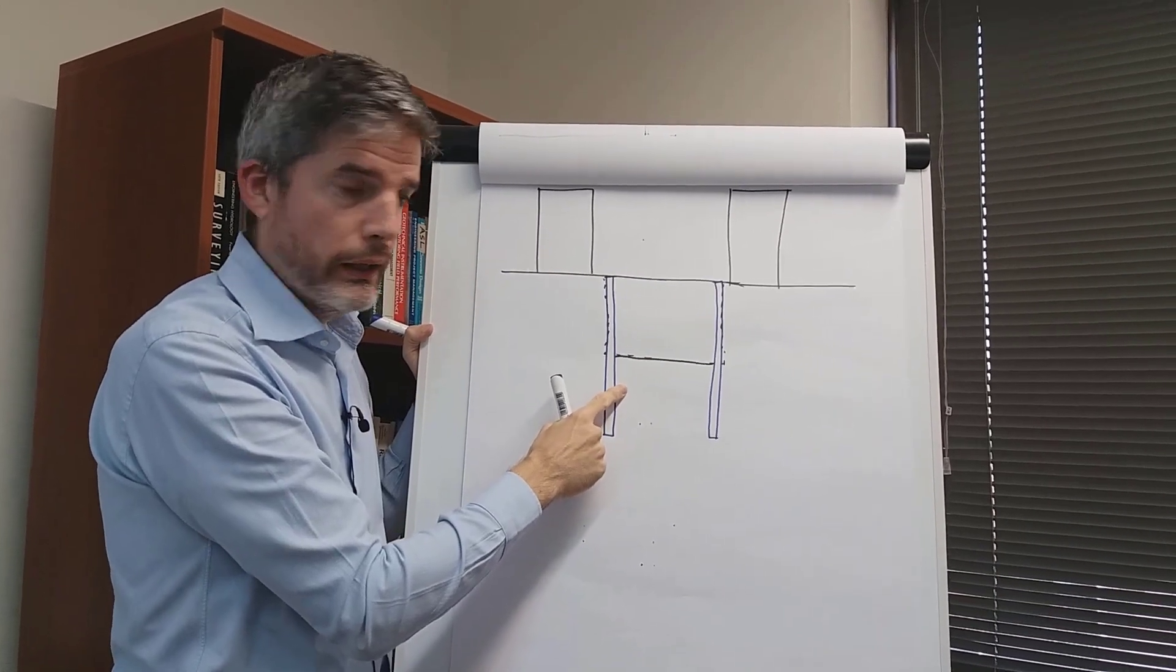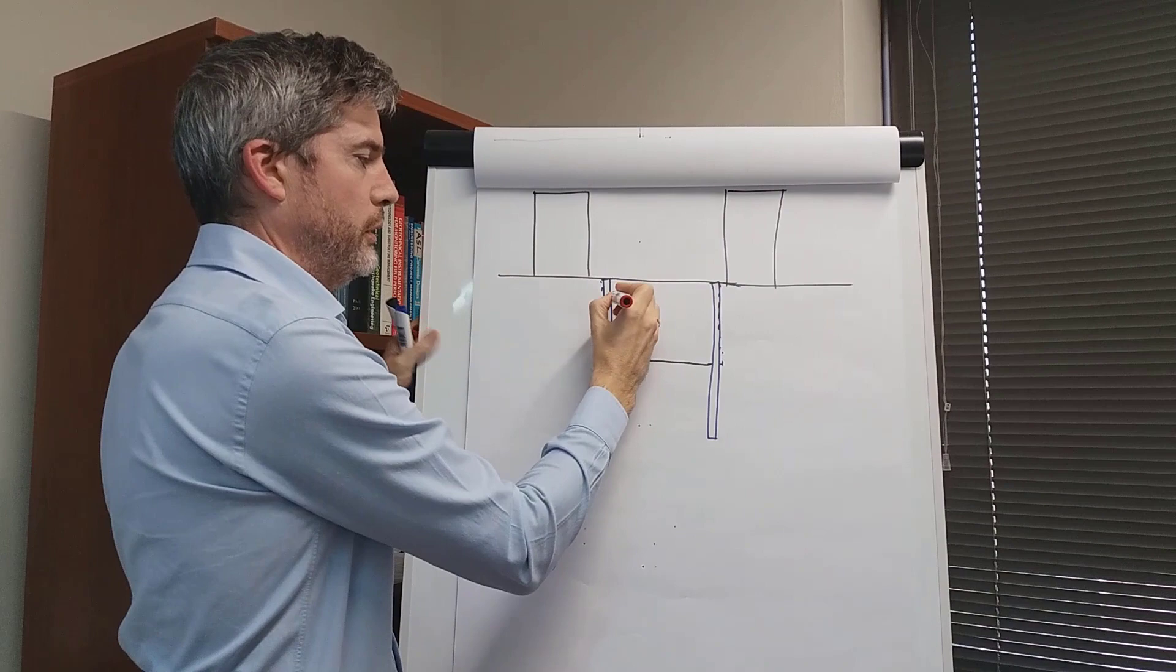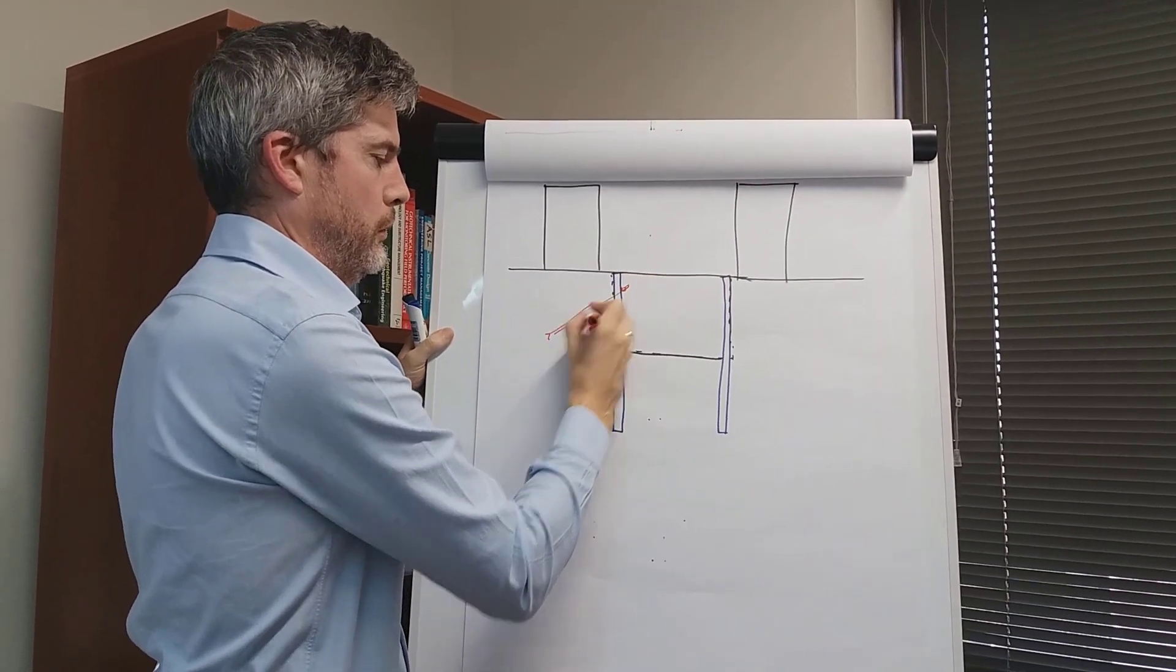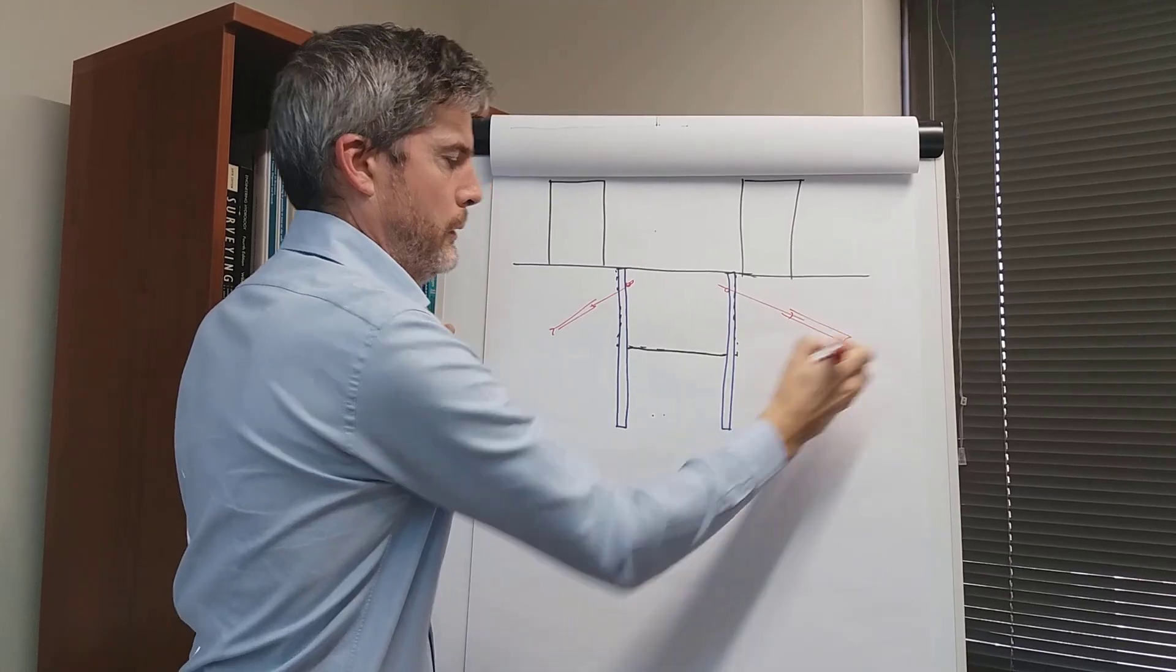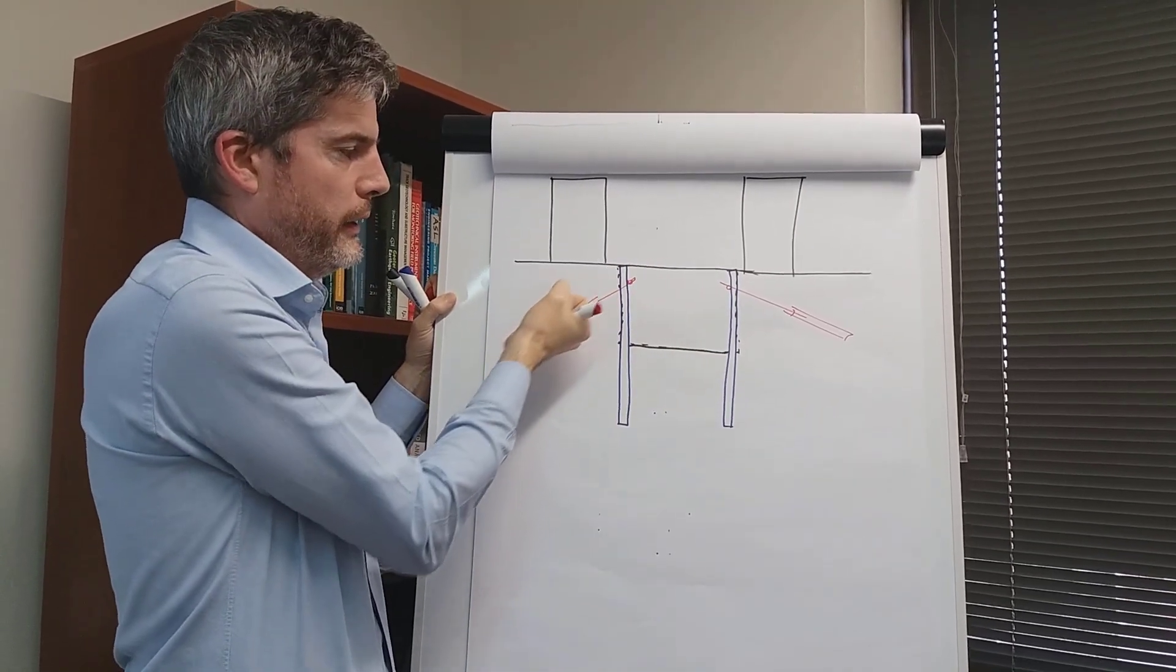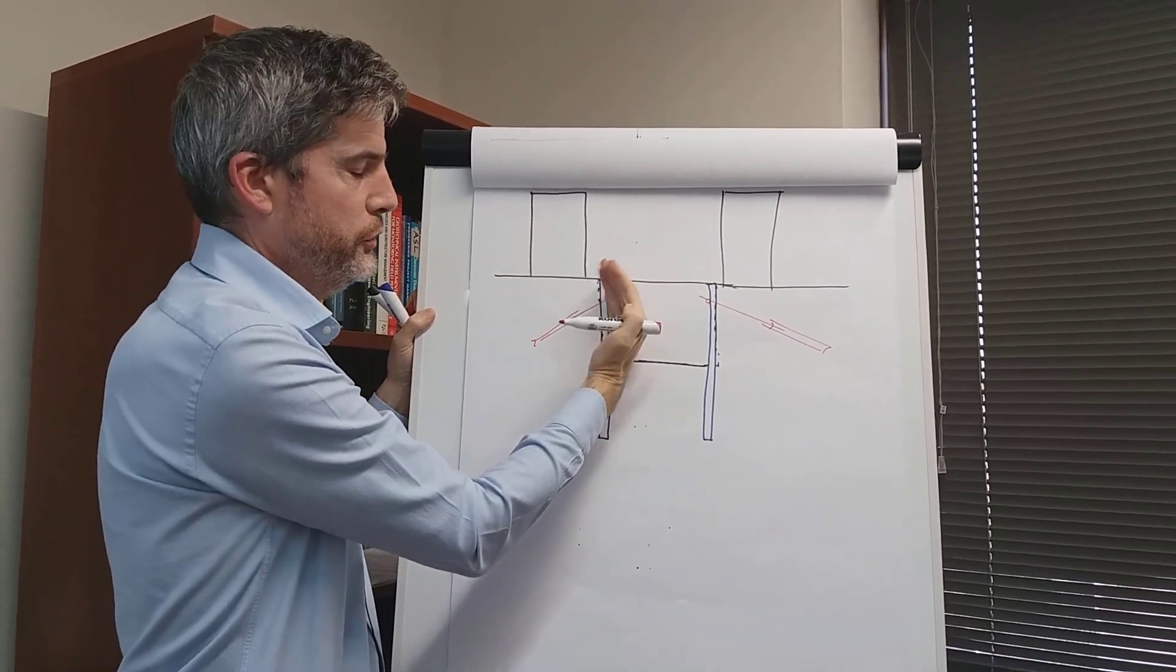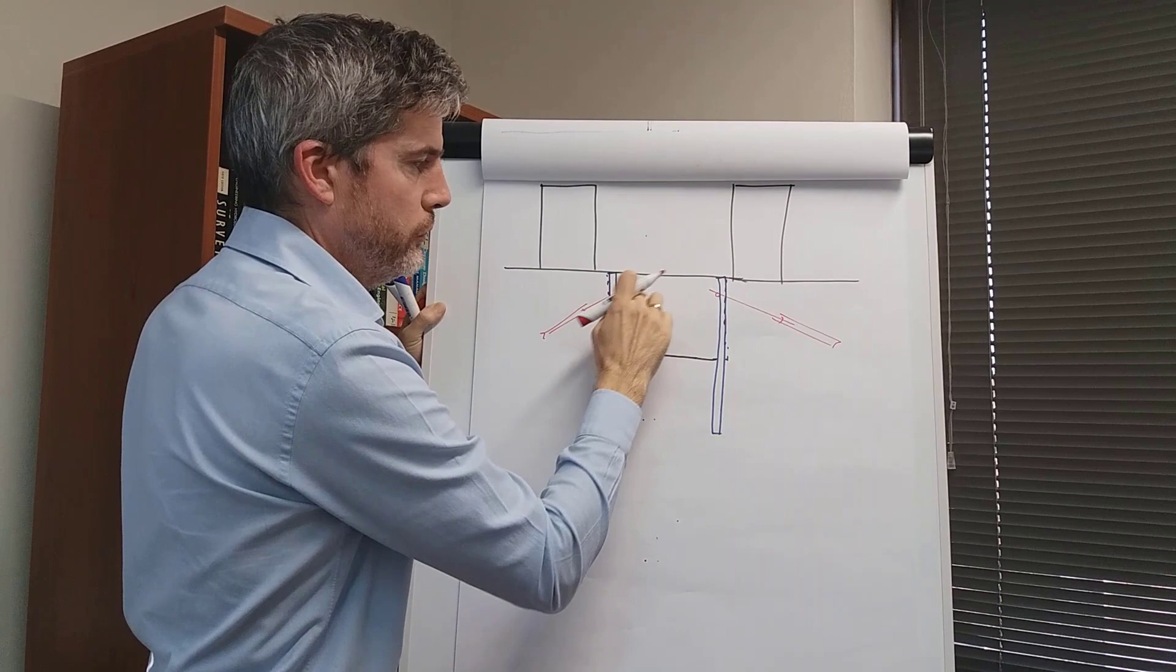Then you can start putting in additional support. You can put in ground anchors, for example. They will even pull the wall back. They can actually be tensioned and help to reduce the deflection in the wall.